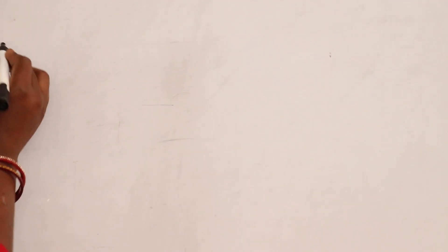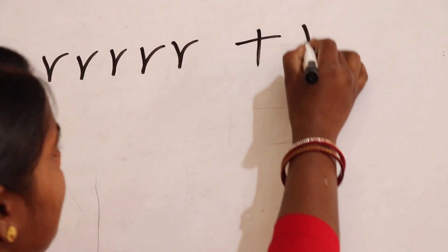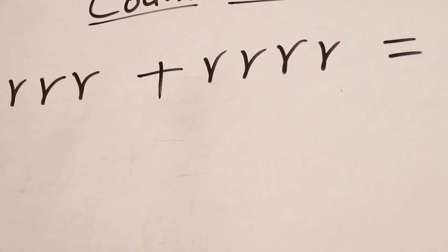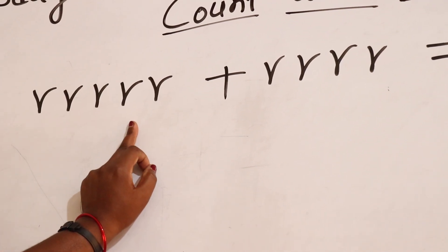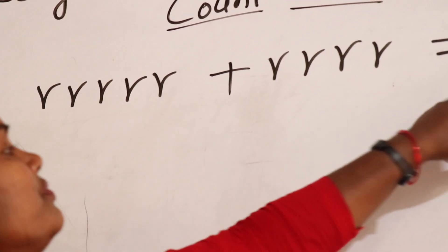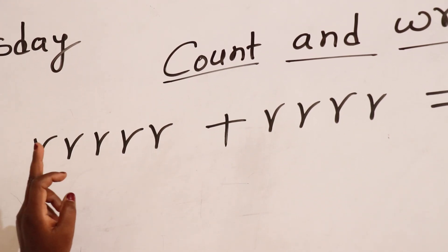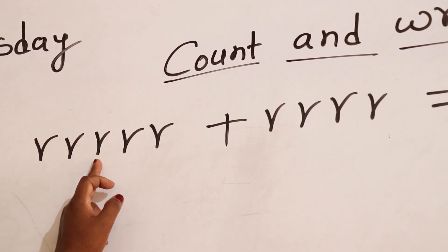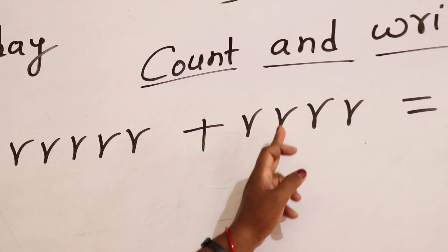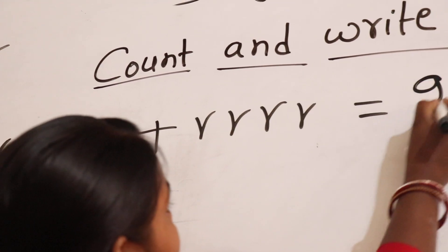One, two, three, four, five. Plus one, two, three, four. This is five words plus four words. This is equal to total words are one, two, three, four, five, six, seven, eight, nine. Total words are nine.